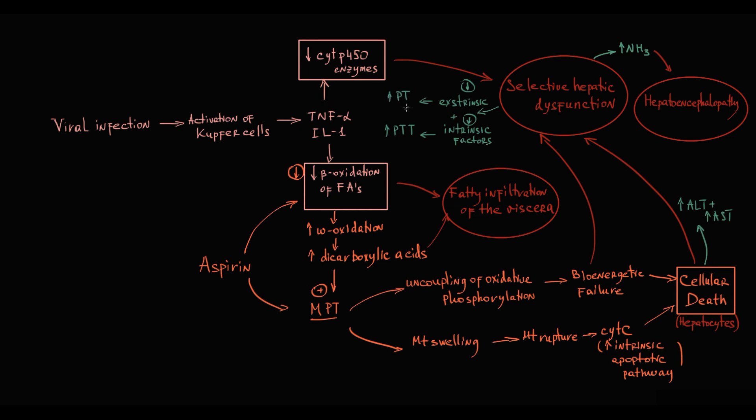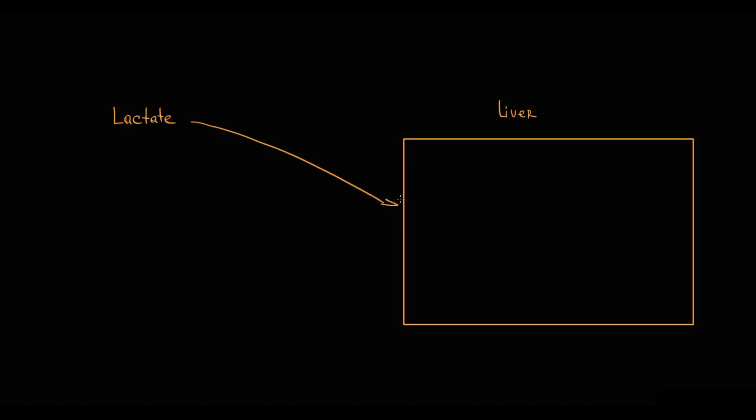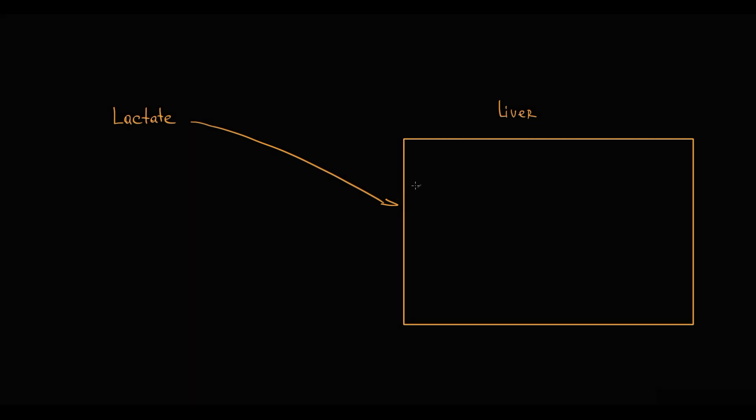In Reye syndrome, lactic acidosis develops. In normal conditions, liver is the main consumer of lactate. Liver consumes approximately 30 to 70% of lactic acid from blood. Hepatocytes uptake lactate from blood and convert it to pyruvate and then to glucose.